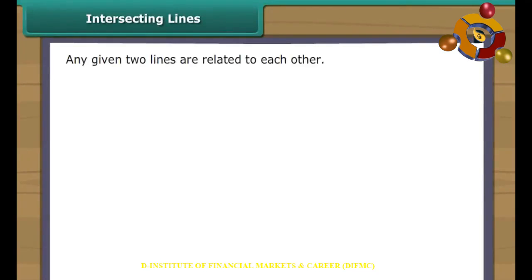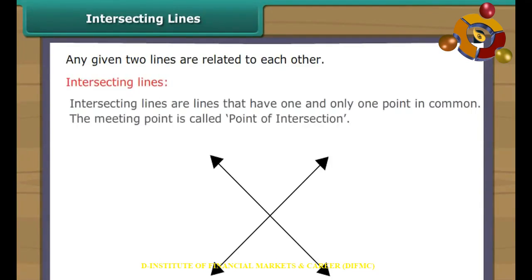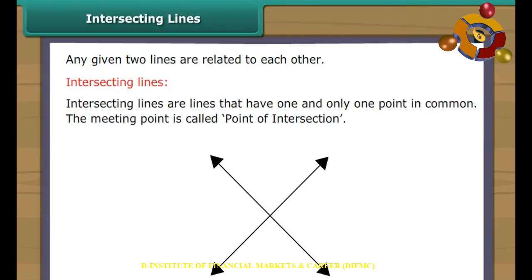Intersecting Lines. Two lines are related to each other in different ways. Let us look at each way separately. Intersecting lines are lines that have one and only one point in common. This meeting point is called the point of intersection.